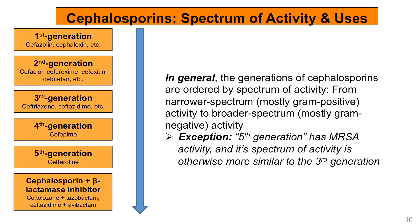Now let's shift over to the cephalosporin subclass, which traditionally has been divided into generations. However, the most recently approved cephalosporins are only available in combination with BLIs and are not commonly classified as sixth generation. In addition, ceftaroline is often called next generation rather than fifth generation. The grouping of cephalosporins is similar to that of the penicillins in that the generations are ordered by spectrum of activity, from narrower spectrum with mostly gram-positive coverage, to broader spectrum with mostly gram-negative coverage.